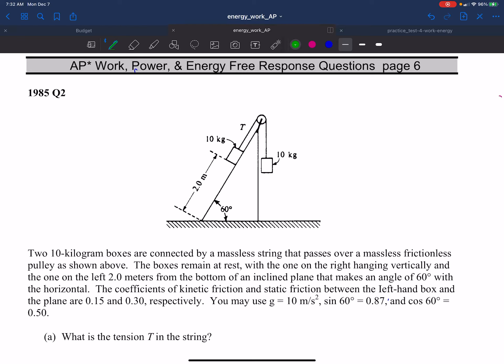Okay, so we'll be doing a solution for 1985 Q2. Two 10-kilogram boxes are connected by a massless string that passes over a massless friction pulley, as shown above. The boxes are at rest, with one on the right hanging vertically and the one on the left two meters from the bottom of the inclined plane. They give us a couple of coefficients of static and kinetic friction.